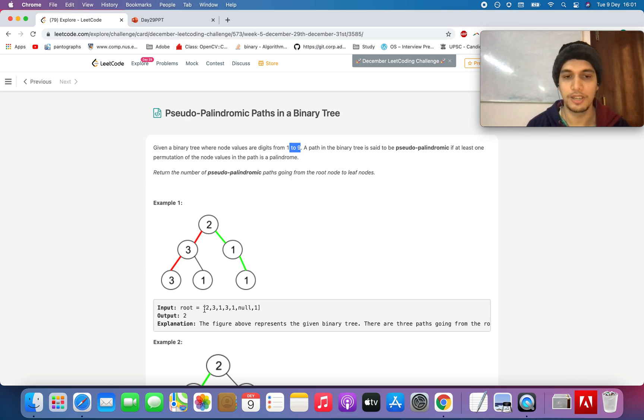In this example it would be 2 - for 2, 3, 3, one path is this and the other path is 2, 1, 1. We can reorder them and generate two palindromic strings out of it.